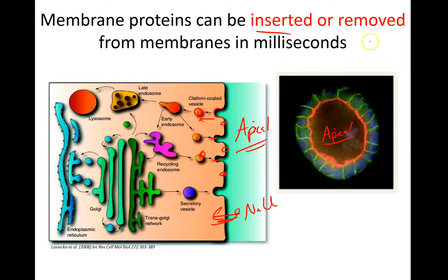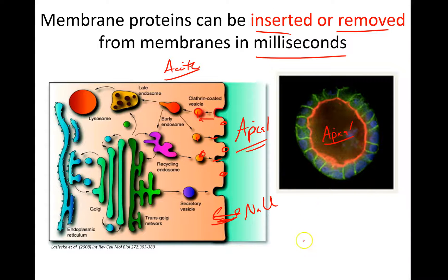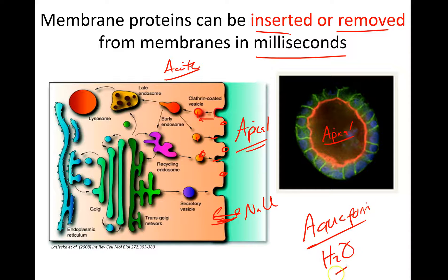Effectively you're changing the amount of the transport protein that's actually available for doing the transport. So this would be insertion or removal of proteins, and this happens very rapidly — this is an acute change. One example of this is aquaporin, which is in the collecting duct of your kidney and transports water. This will be very important for regulating how much urine you produce and the concentration of that urine.